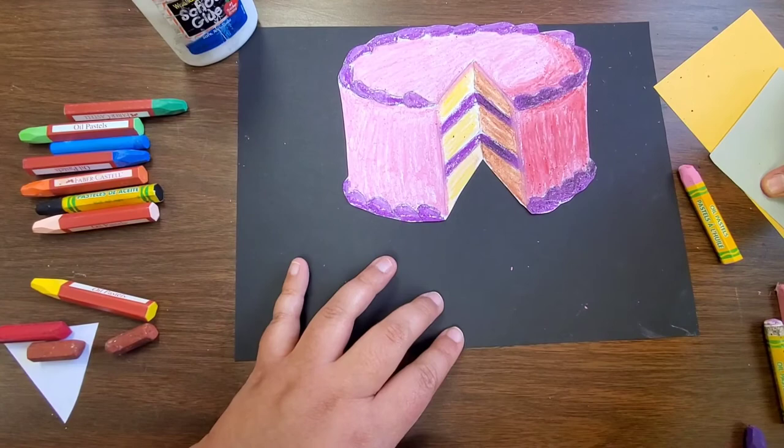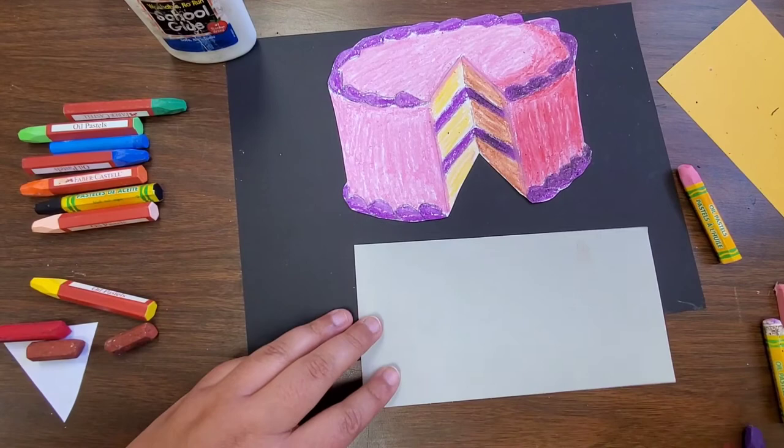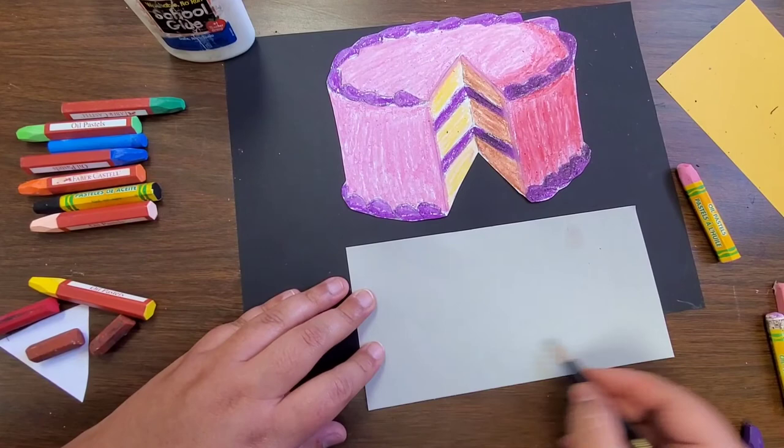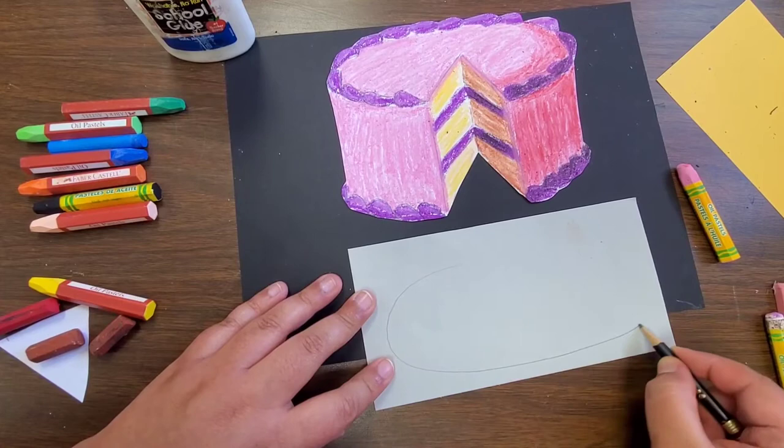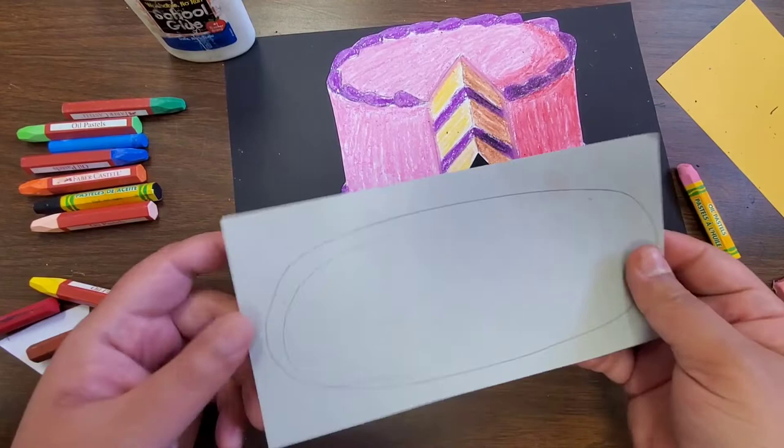Now I've got my cake shape cut out. I'm going to take my small paper where I want to draw my plate for my cake. Just using a pencil, I'm going to draw a very wide oval just like the way I did for the top of my cake. Then I'm going to go ahead and cut that out with my scissors.